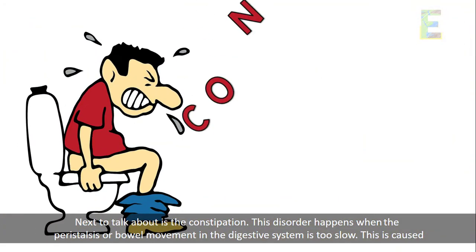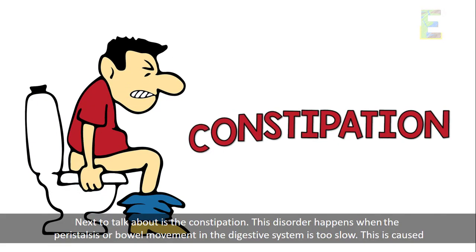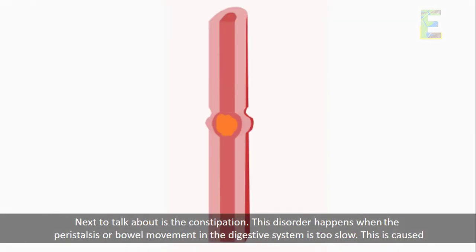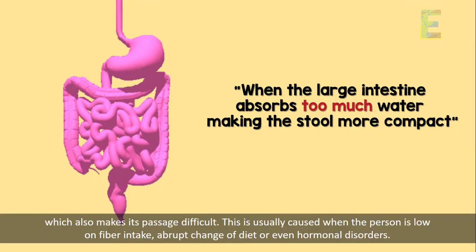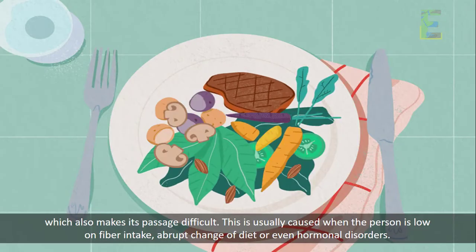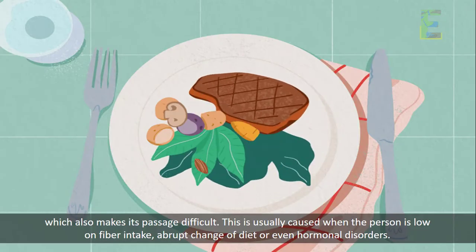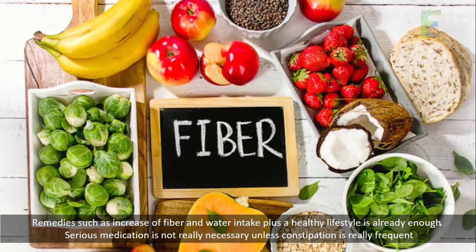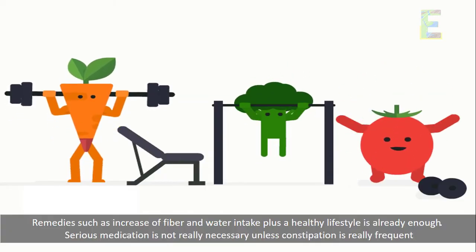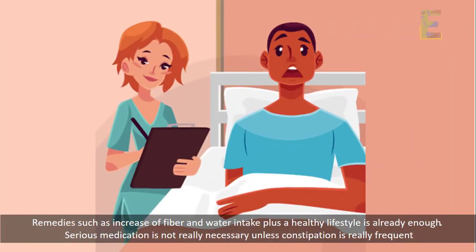Next to talk about is constipation. This disorder happens when the peristalsis or bowel movement in the digestive system is too slow. This is caused when the large intestine absorbs too much water, making the stool more compact, which also makes its passage difficult. This is usually caused when the person is low on fiber intake, abrupt change of diet, or even hormonal disorders. Remedies such as increase of fiber and water intake plus a healthy lifestyle is already enough. Serious medication is not really necessary unless constipation is really frequent.